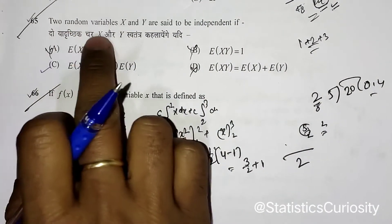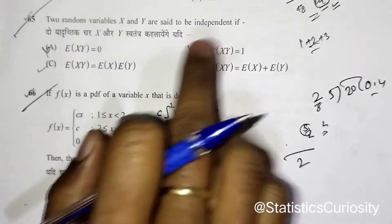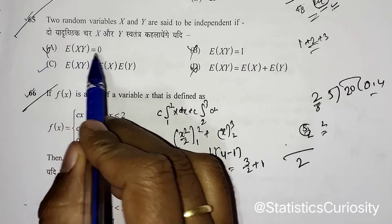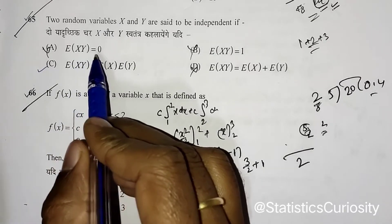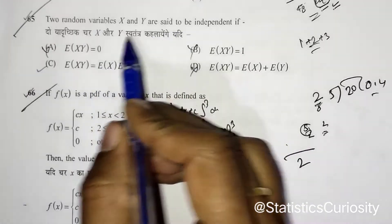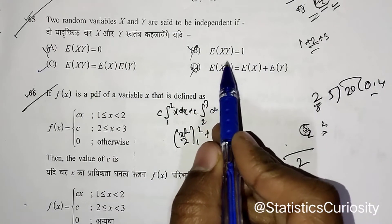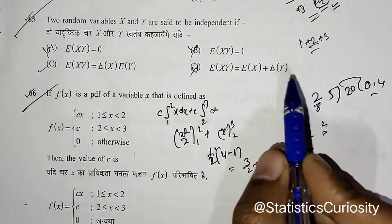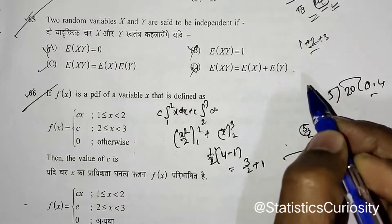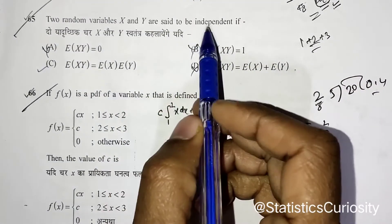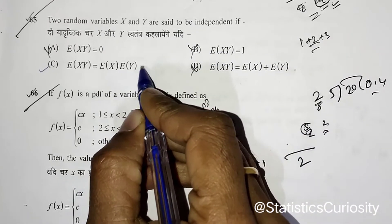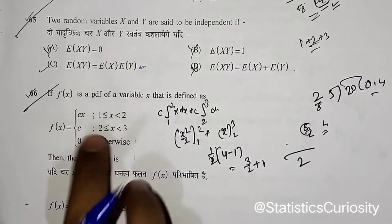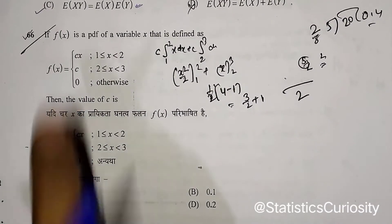First question: two random variables X and Y are said to be independent. This is a direct result you have to remember. E[XY] = 0 does not imply X and Y are independent. Similarly, E[XY] = 1 and E[XY] = E[X] + E[Y] also do not imply independence. The result that does imply X and Y are independent is E[XY] = E[X]·E[Y]. This is a direct result you must remember.